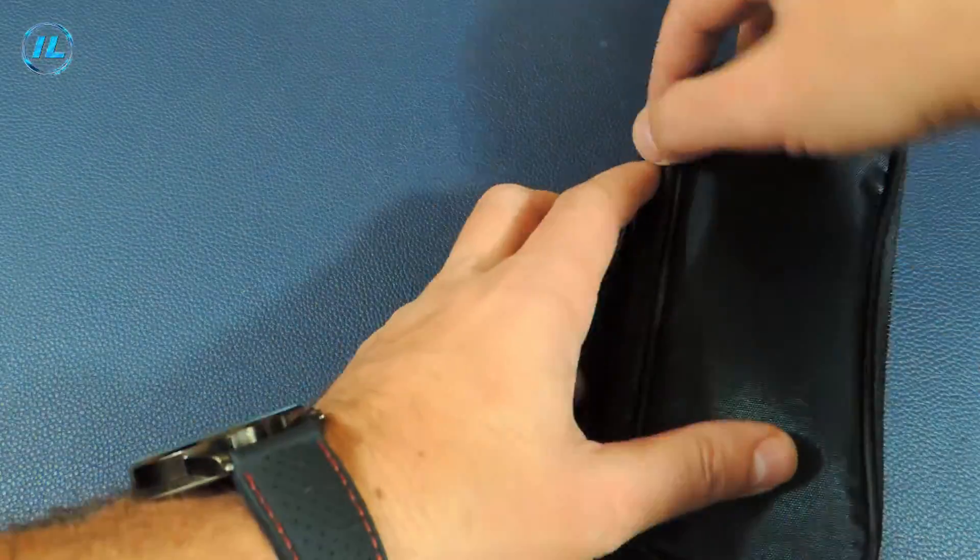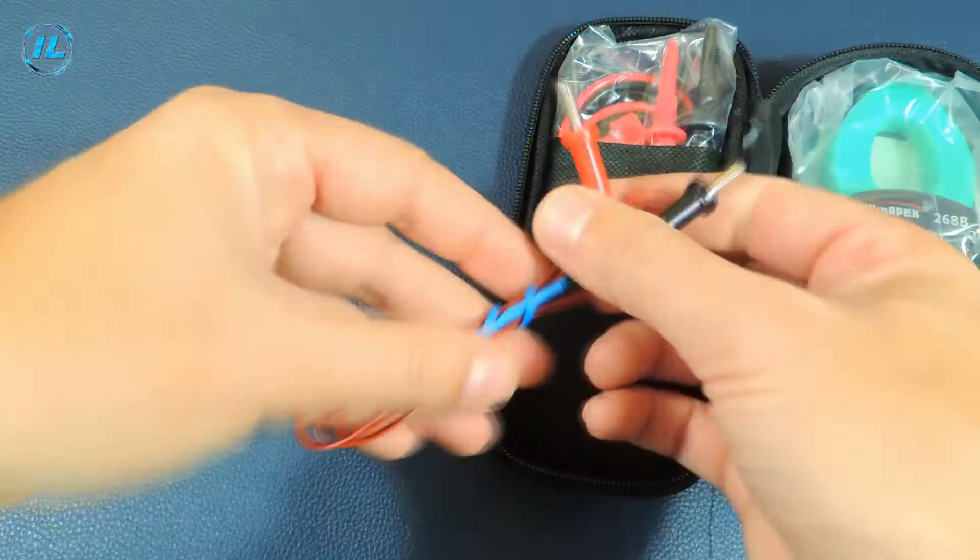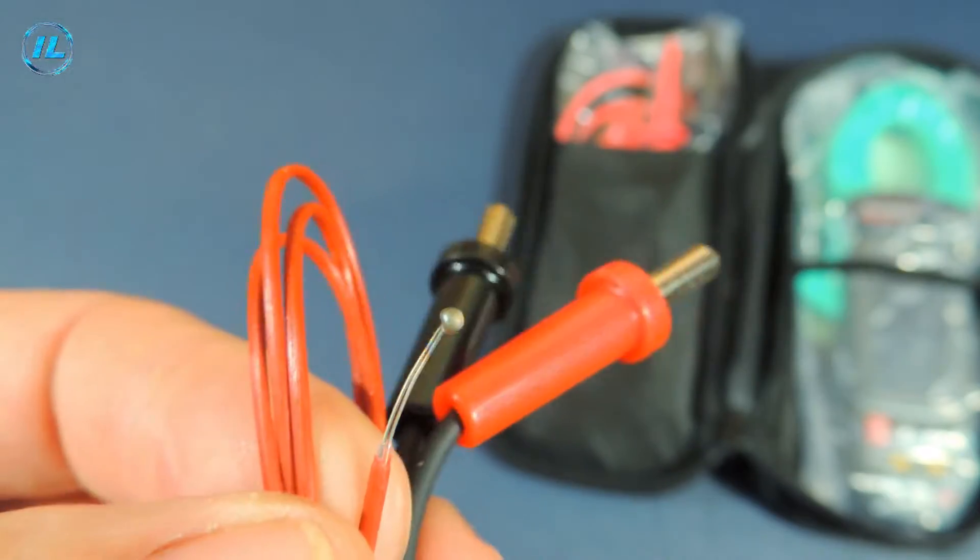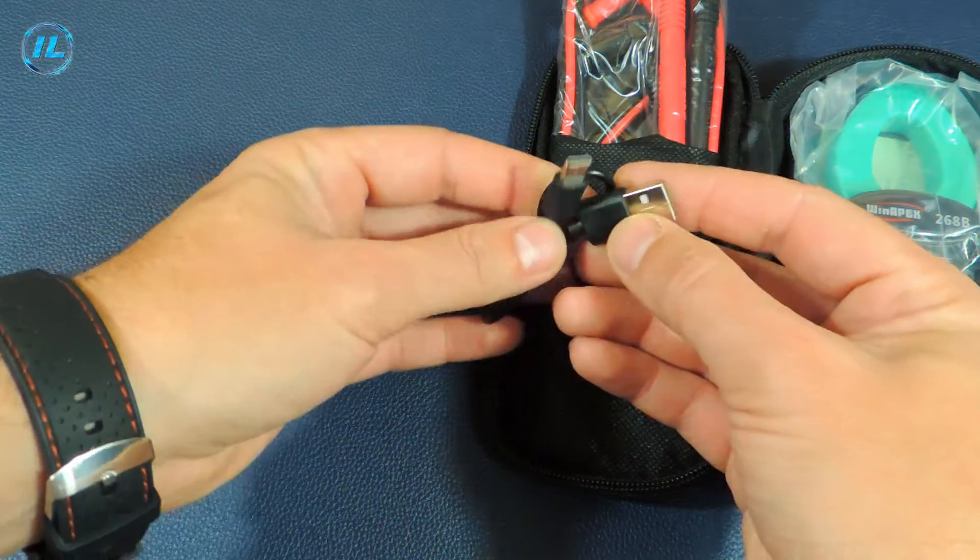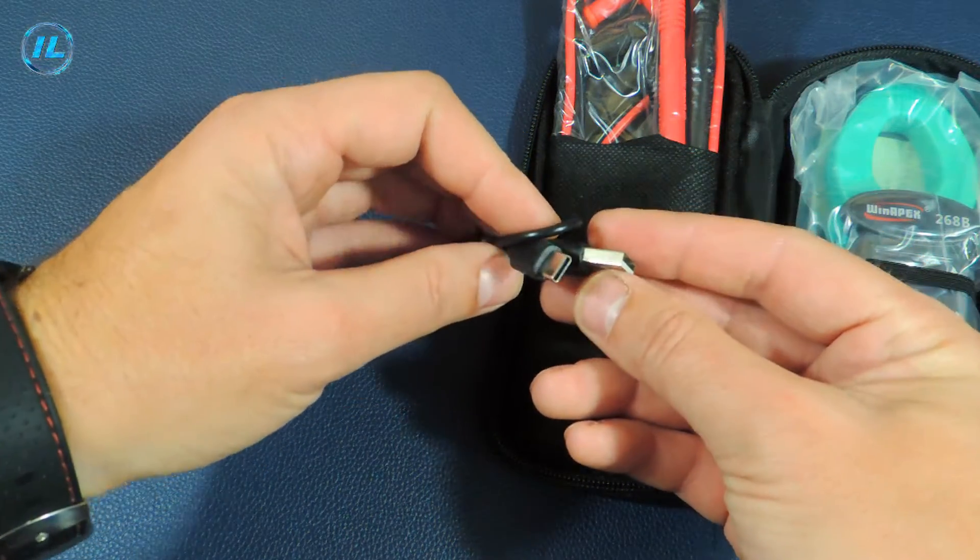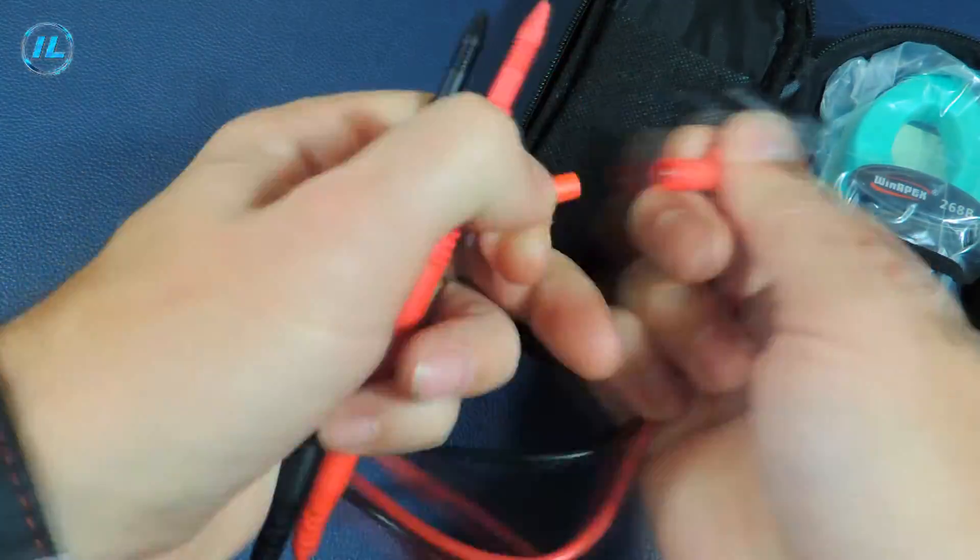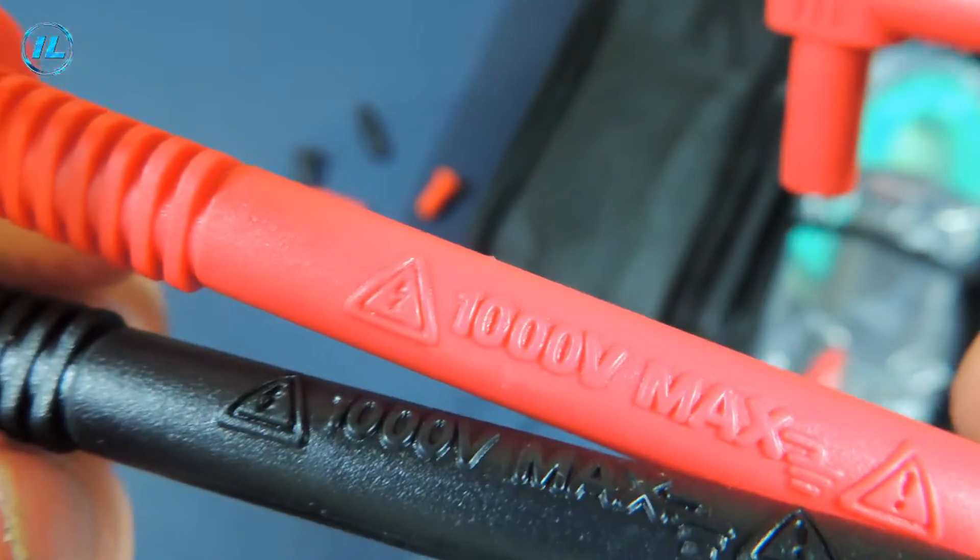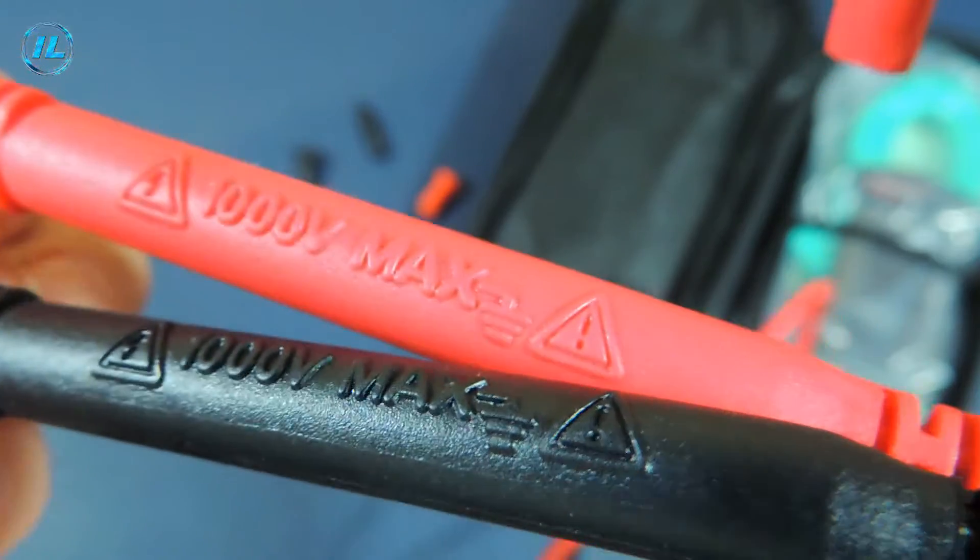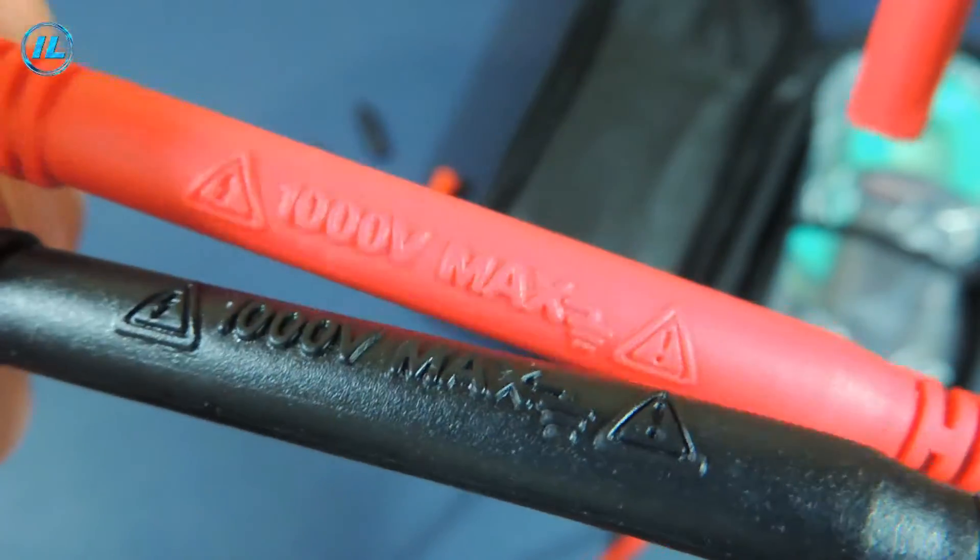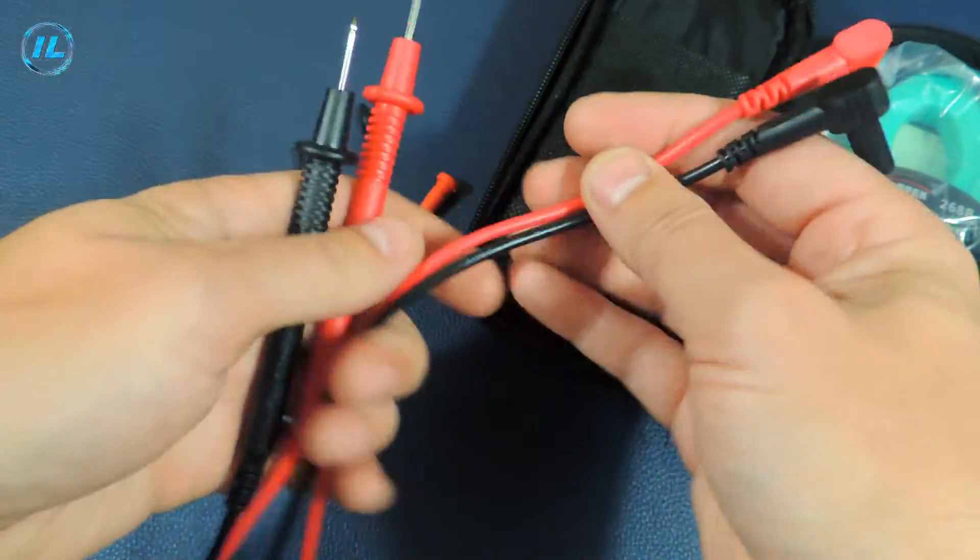Now let's look at the configuration of this device. A thermocouple. USB cord for charging the device. And probes. The measurement limit of these probes is 1000V, but nothing is said for the current strength. The cord is long. It is not silicone, but it is soft enough.